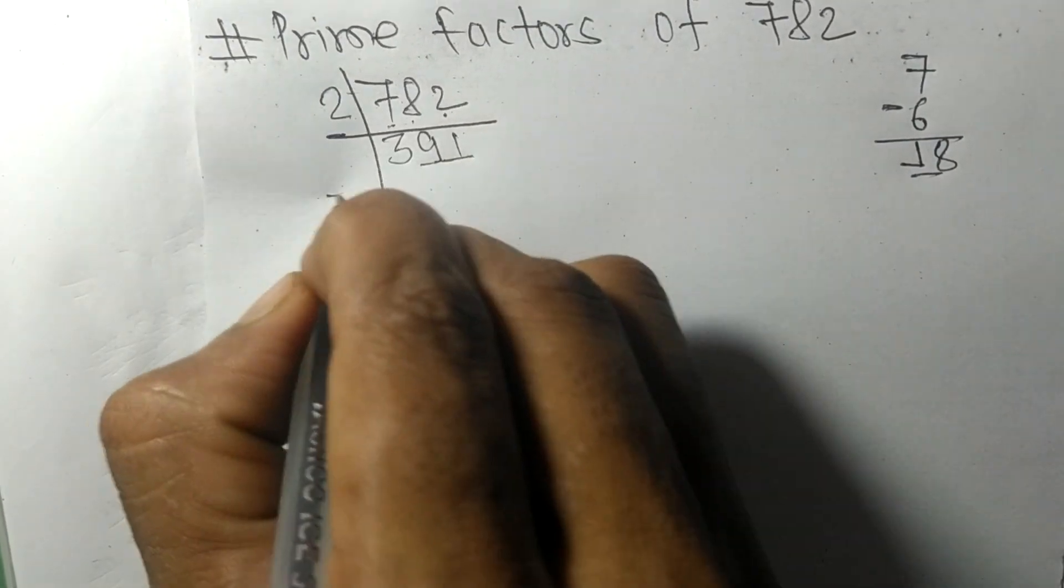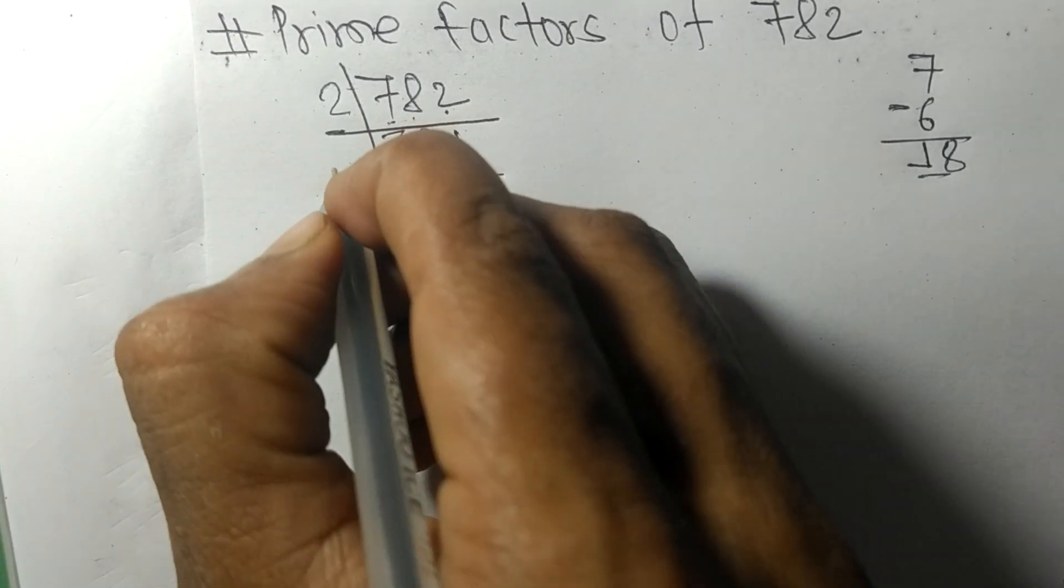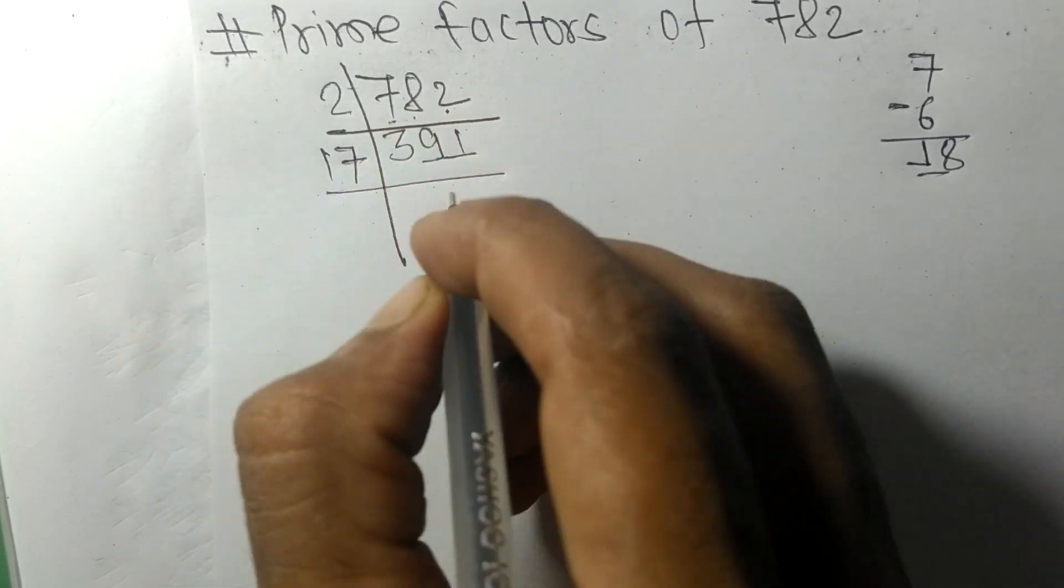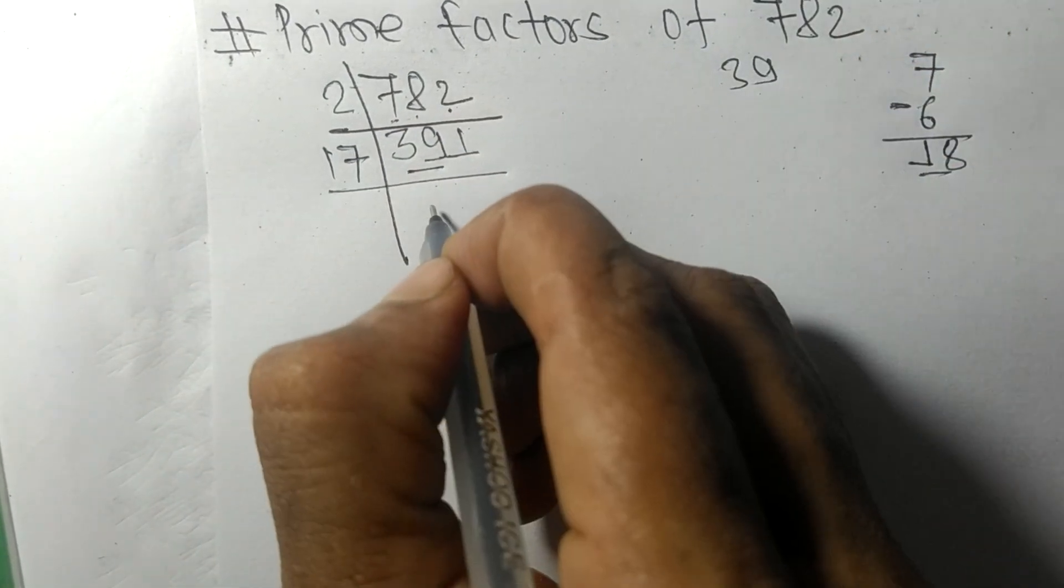Now we got 391, which is exactly divisible by 17. So here we have 39, so 17 times 2 means 34.